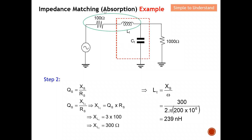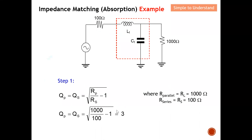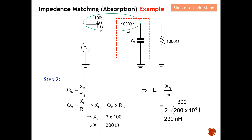Step 2: Focus on the series portion. For the series case, Q_S equals reactance in series divided by resistance in series. I need to find my XL, so XL equals Q multiplied by R_S. With Q equal to 3 and series resistor equal to 100 ohm, XL equals 300 ohm. Using XL equals omega times L, I rearrange the formula and calculate the total inductor value as 239 nanohenry.